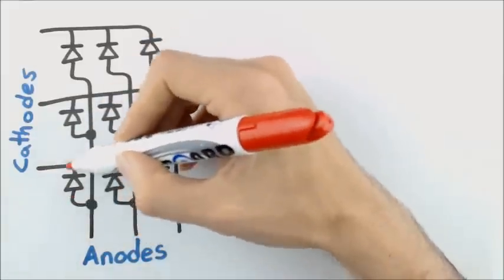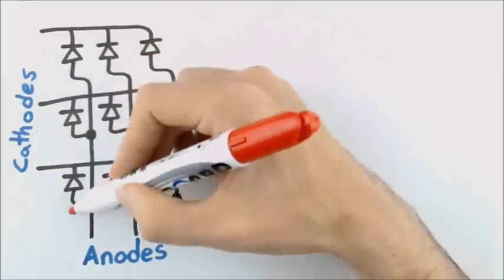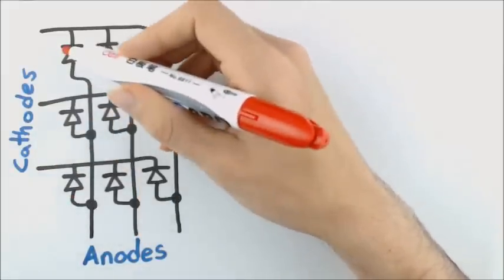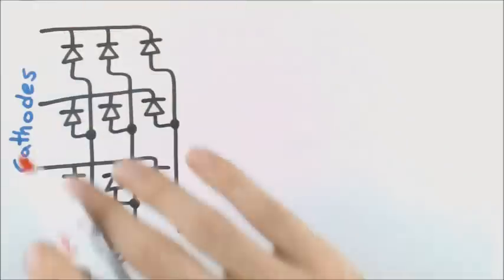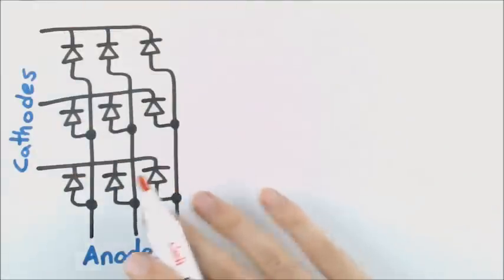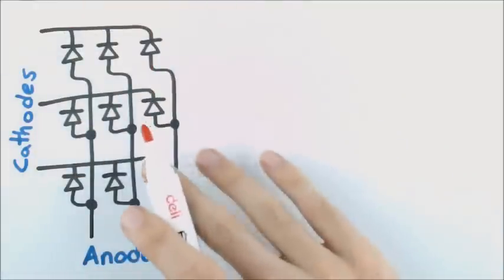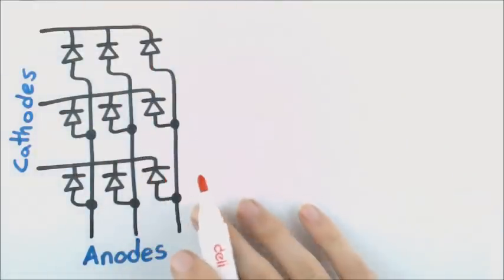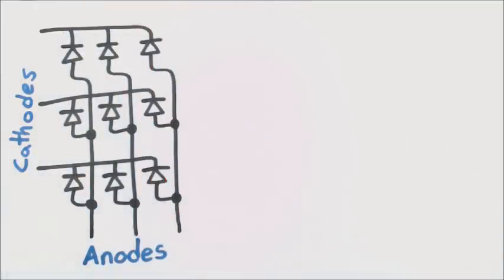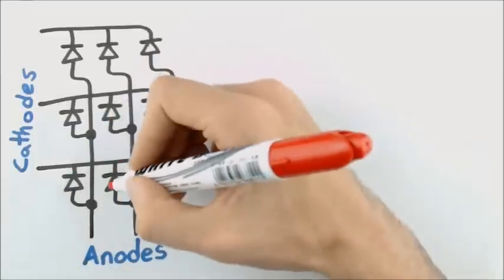In our last video, we talked about how to control one column of LEDs. What we would like to do is be able to control our entire LED matrix. This is actually more difficult than it might seem, and to understand why, let's try to light more than one column.